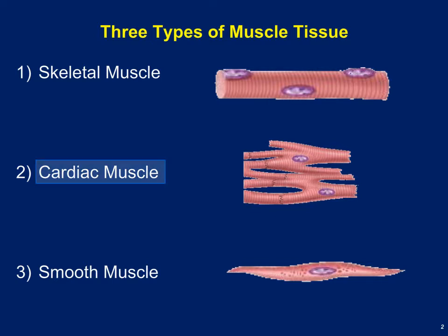Cardiac muscle cells are relatively short, single or binucleate, and striated just like skeletal muscle, but not under voluntary nervous control. Smooth muscle is found lining blood vessels and hollow organs like the intestines and stomach. As the name implies, smooth muscle doesn't have any striations. It has very small cells with a single nucleus, and it's involuntary — controlled by our endocrine system and autonomic nervous system.